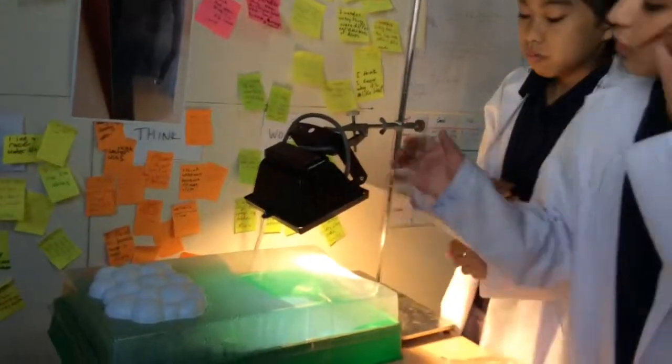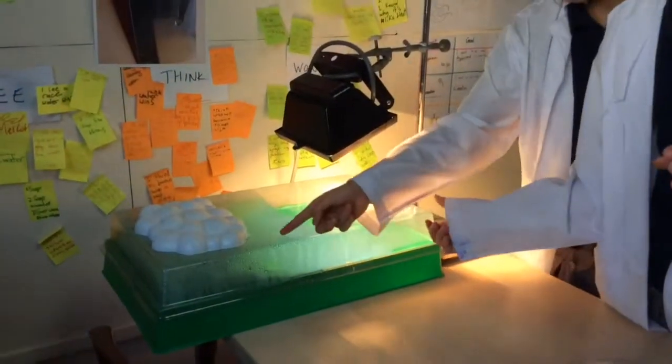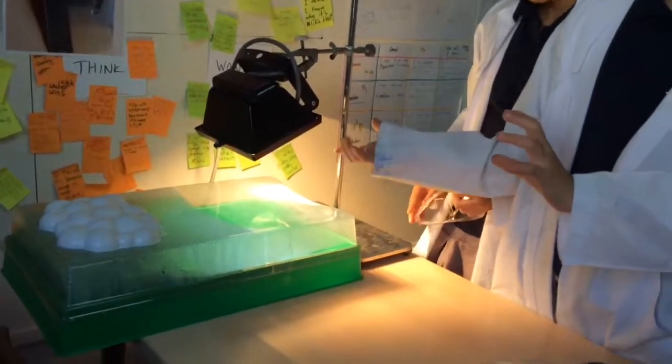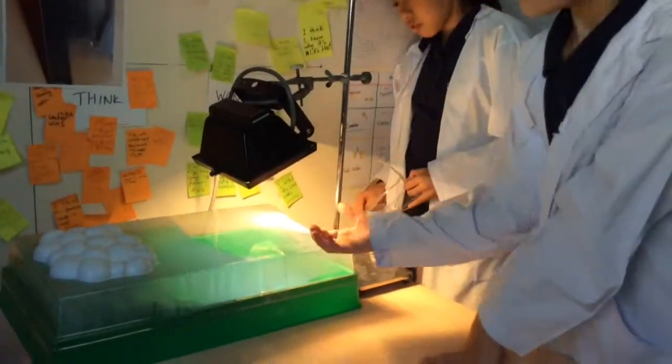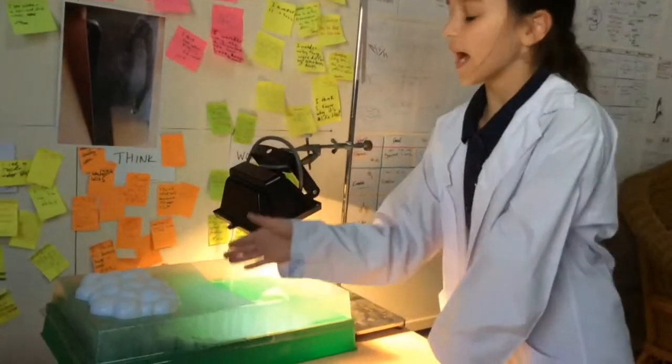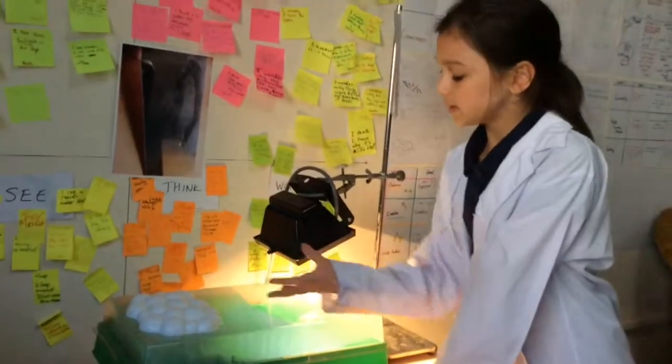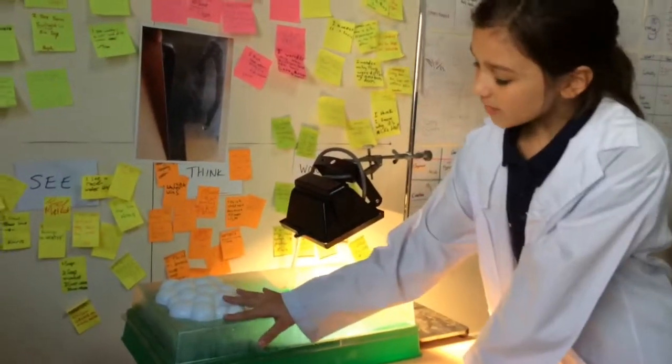So you might ask why there is a lot of bubbles. The water goes up because it heats up. Then it goes on the side because it's like ice, so it takes the heat. And then the ice melts.